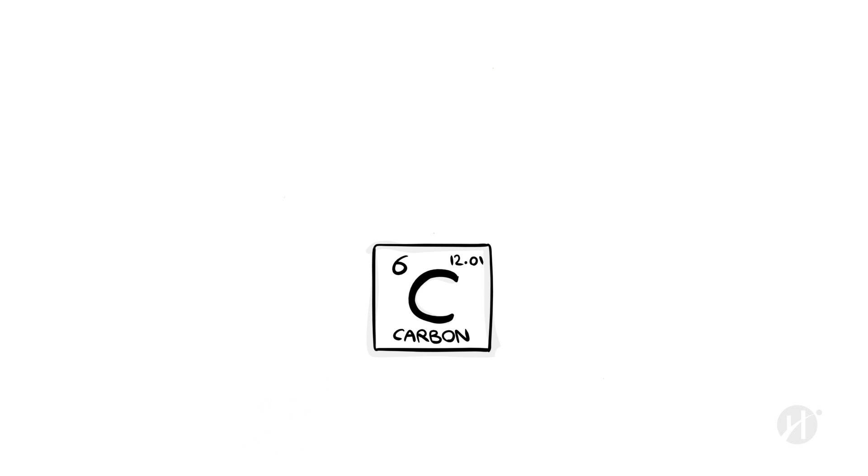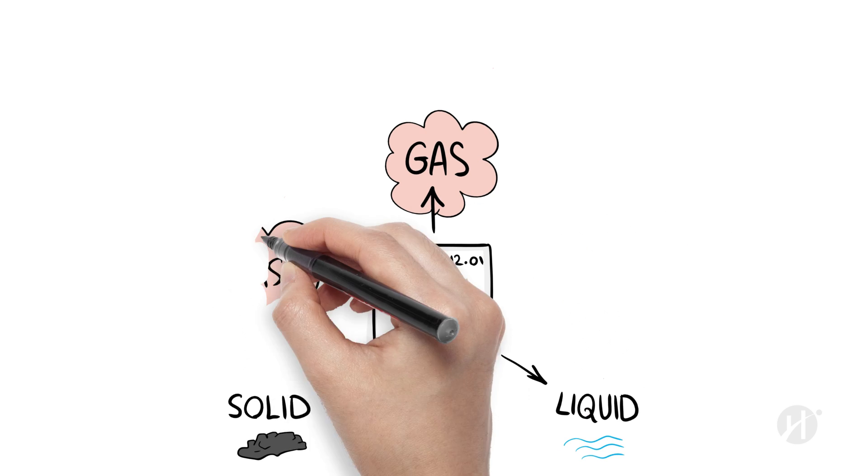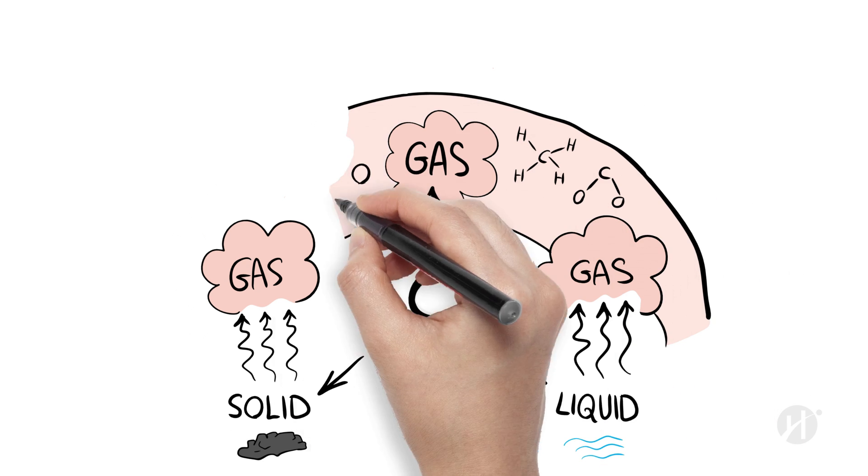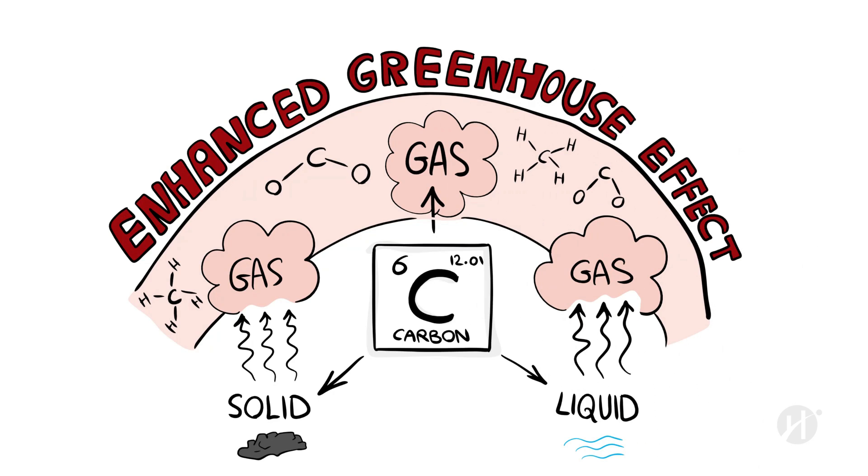Carbon can exist in three states: solid, liquid and gas. However, of the three states of matter, it's only in its gas form that carbon contributes to global warming. So anything that converts a solid or liquid form of carbon into a gas will contribute to the enhanced greenhouse effect.